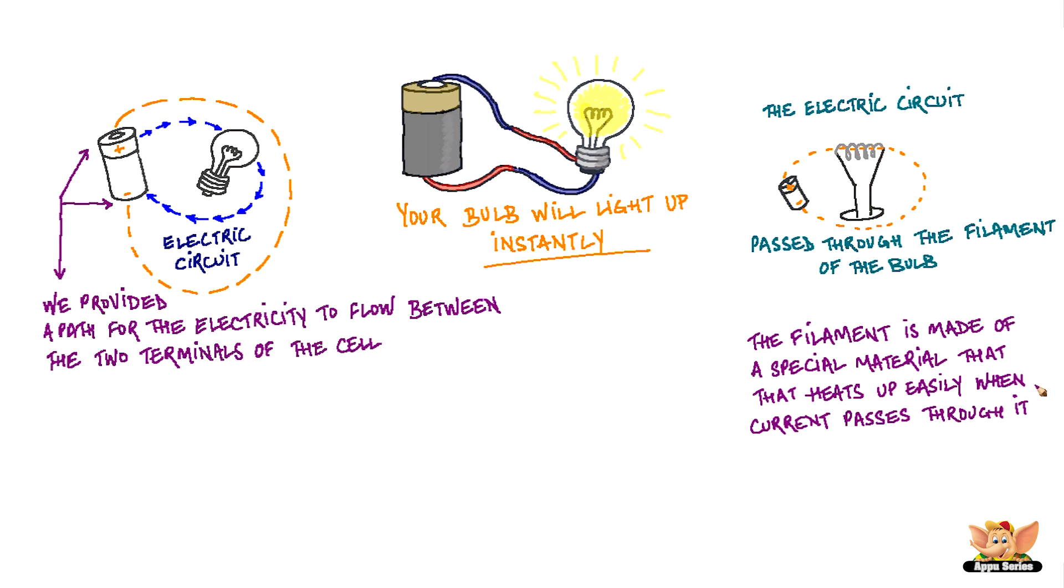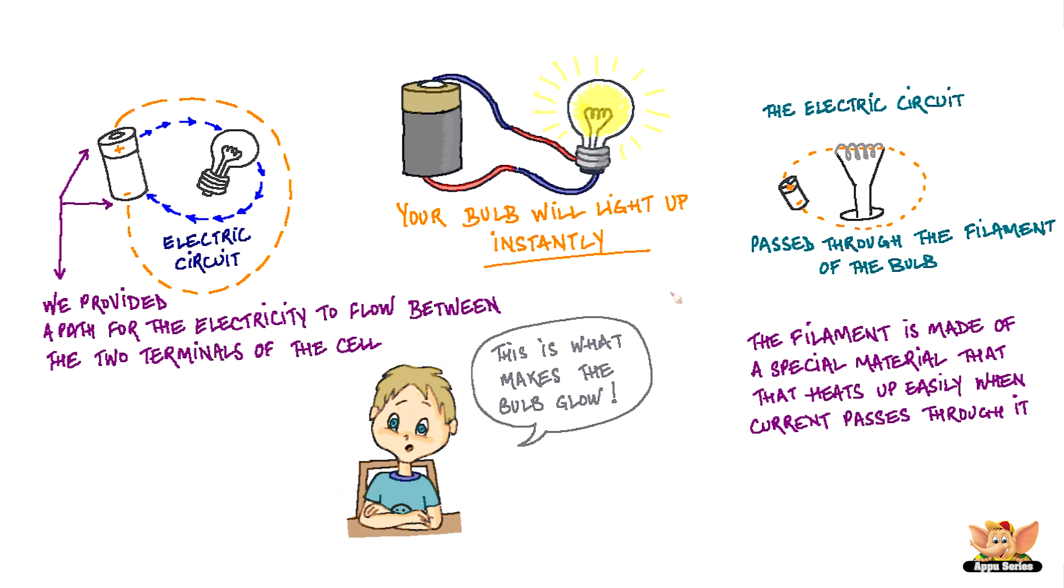The filament is made up of a special material that heats up easily when the current passes through it. This is what makes the bulb glow.